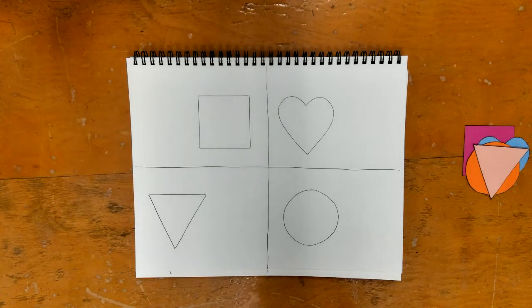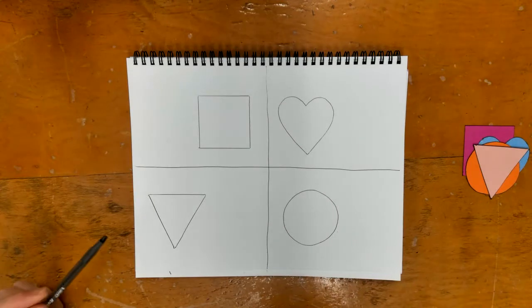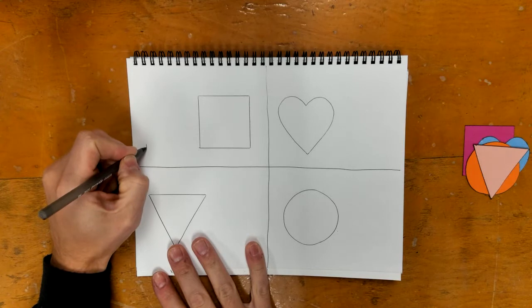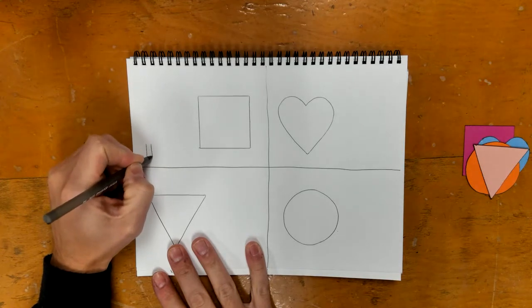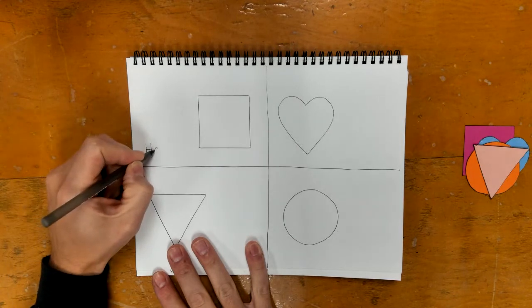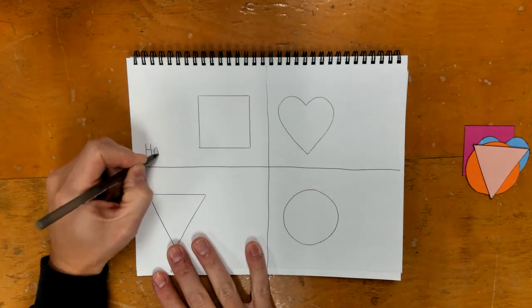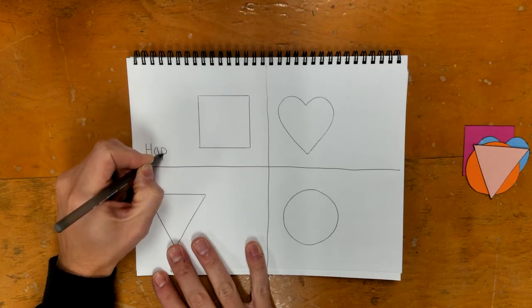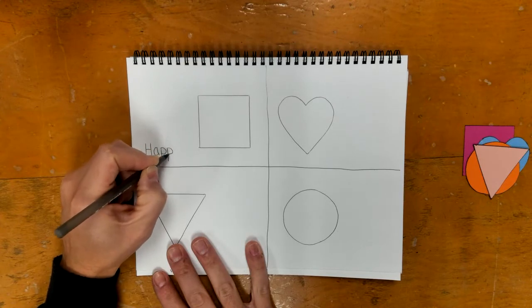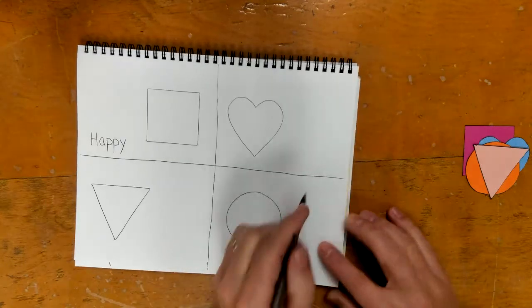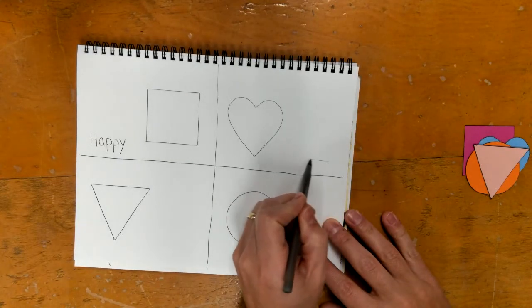So now that we have that, we are going to write a word in each of the squares. So the first word that we're going to write is happy. And so with happy, we're going to start out with an H. And then we're going to write an A and you can just watch. And then a Y after two Ps. And if you need to, you can write or make a little line first.